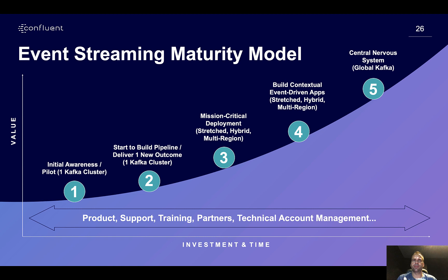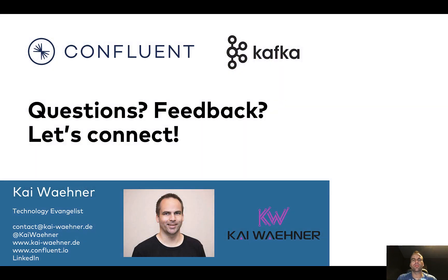This is typically a journey — an event streaming maturity model where you start small, build your first pipeline and use case, maybe by yourself with open source, but then roll it out over hybrid deployments, use fully managed services, and stretch it over regions or globally. We recommend engaging early with us, because even in the initial setup you can do many things wrong depending on your SLAs, high availability requirements, throughput, and latency. Just let us know if you have interesting use cases, and please connect with me on LinkedIn or Twitter — I'm glad to get feedback. Thanks for watching.